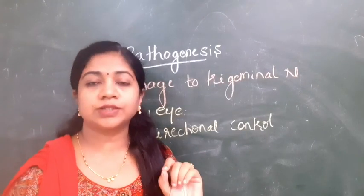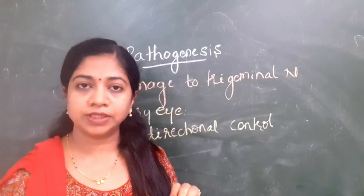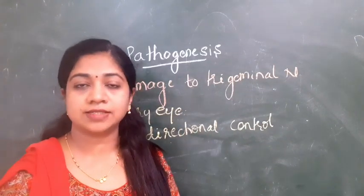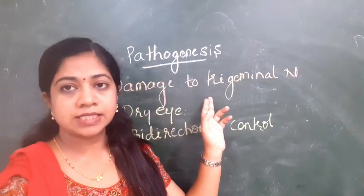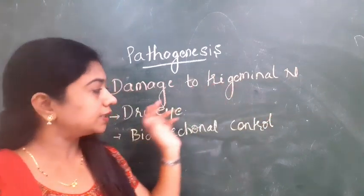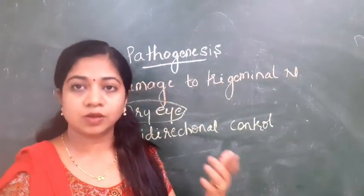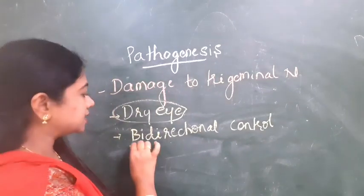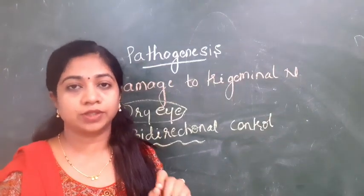When you hear the word trophic corneal ulcer, the first thing which strikes your mind is there is something to do with trigeminal nerve innervation. The pathogenesis is really interesting. The root cause is damage to the trigeminal nerve. Initially, they thought that dry eye was the cause for the corneal ulcer. Later they found that there is a bidirectional control for the epithelial growth of the cornea.